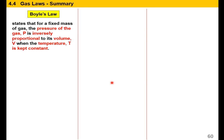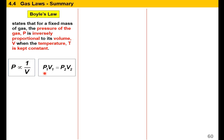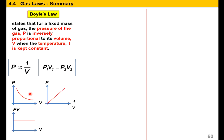Boyle's Law states that for a fixed mass of gas, the pressure of the gas P is inversely proportionate to its volume V when the temperature T is kept constant. The formula is P inversely proportionate to V, or P1V1 equals P2V2. And we have the graph for Boyle's Law.